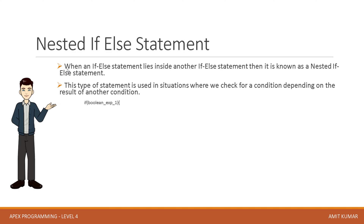For example, we provide a boolean expression with an if-statement, then another boolean expression inside the block of the previous if-statement, and an else with this boolean expression. There is an else for the first boolean expression and an if-else inside this else. Boolean expression 2 will be evaluated only when boolean expression 1 is true. And if boolean expression 2 is false, then only the else block attached with this if will be executed. Similarly, the else block will be executed only when boolean expression 1 is false.